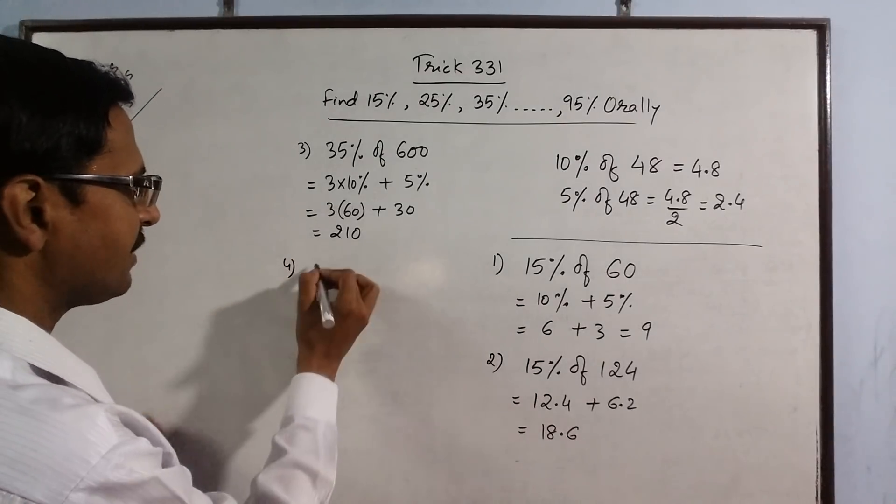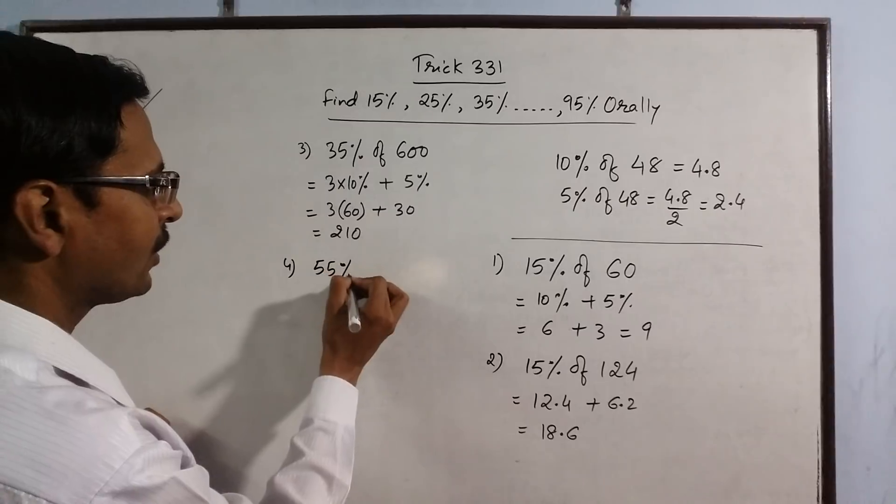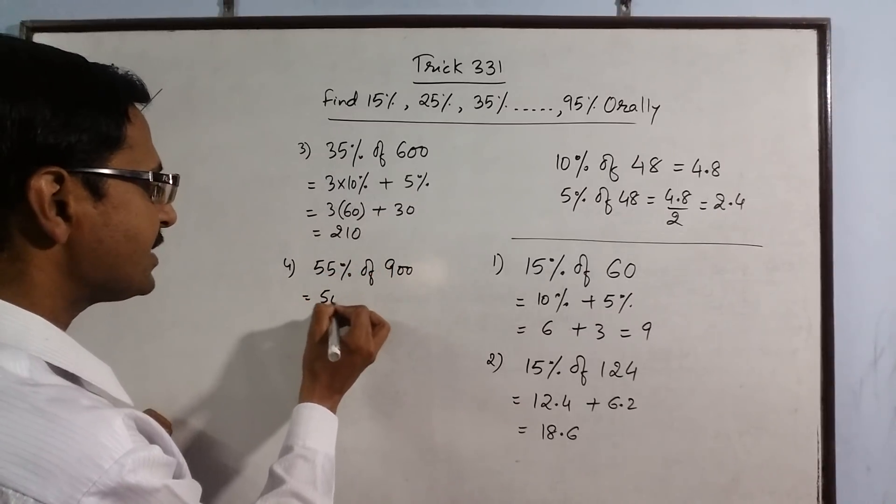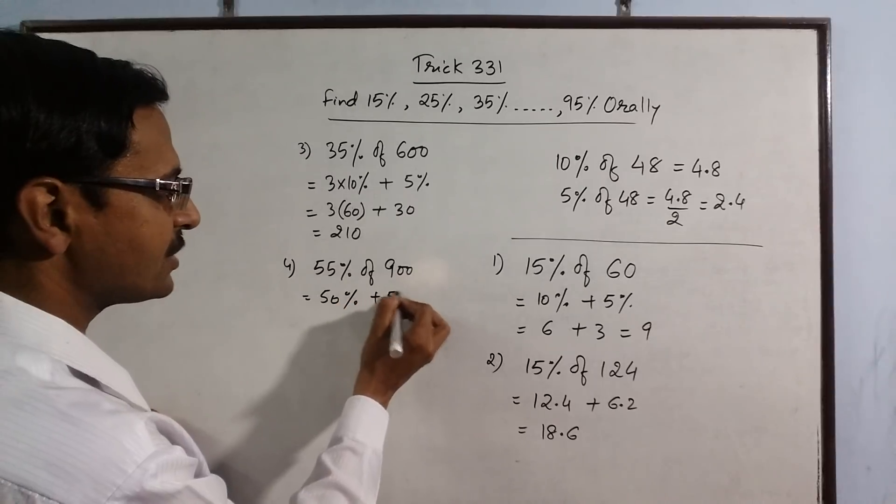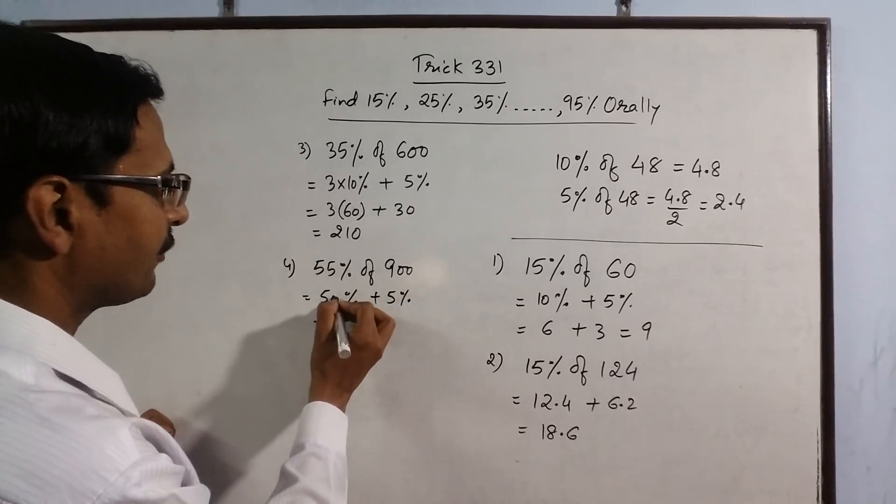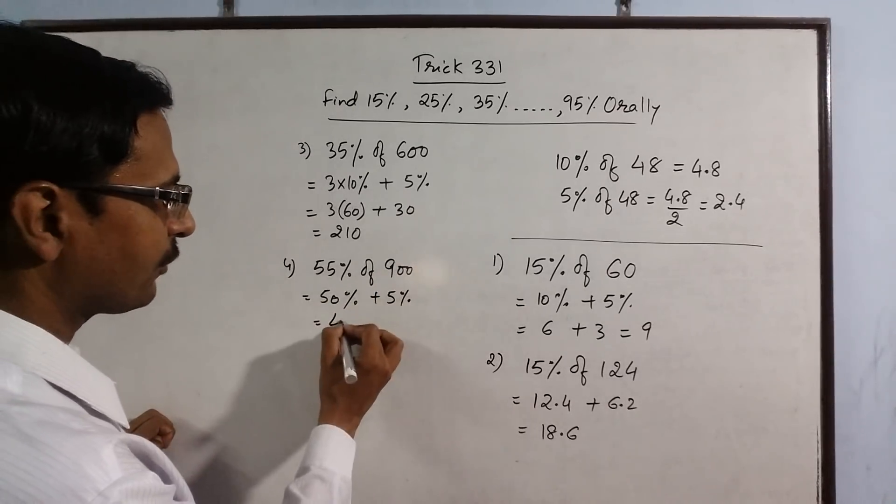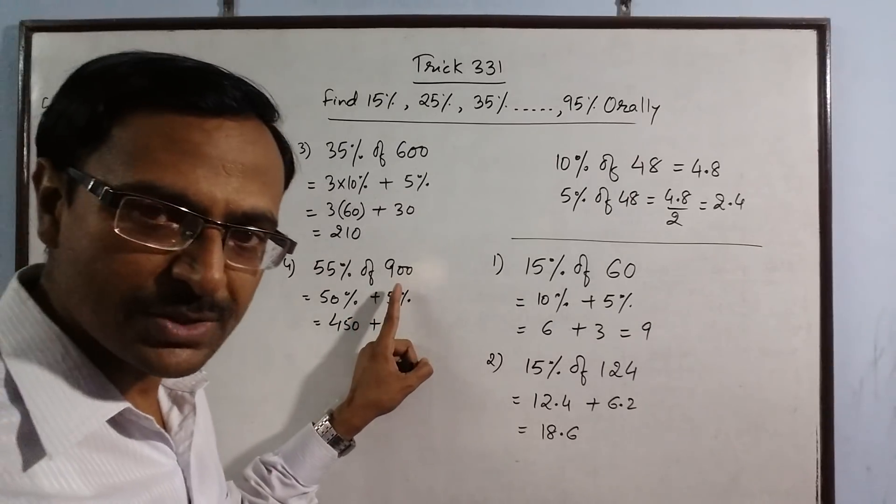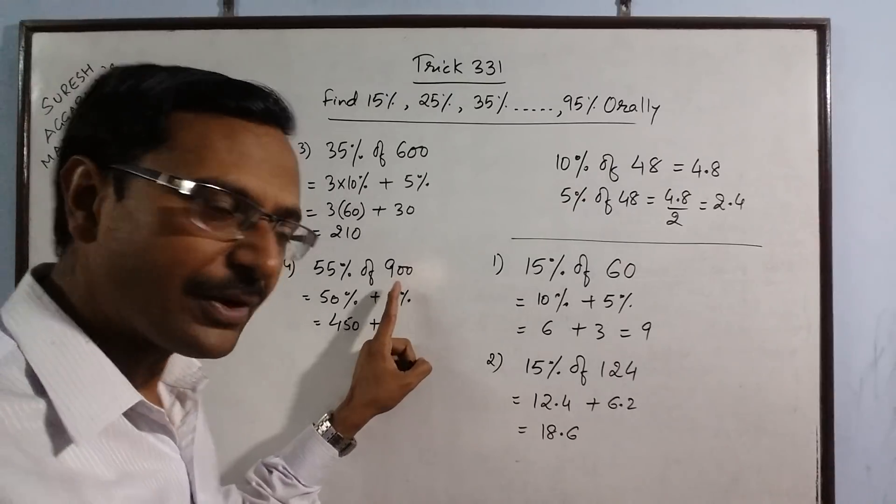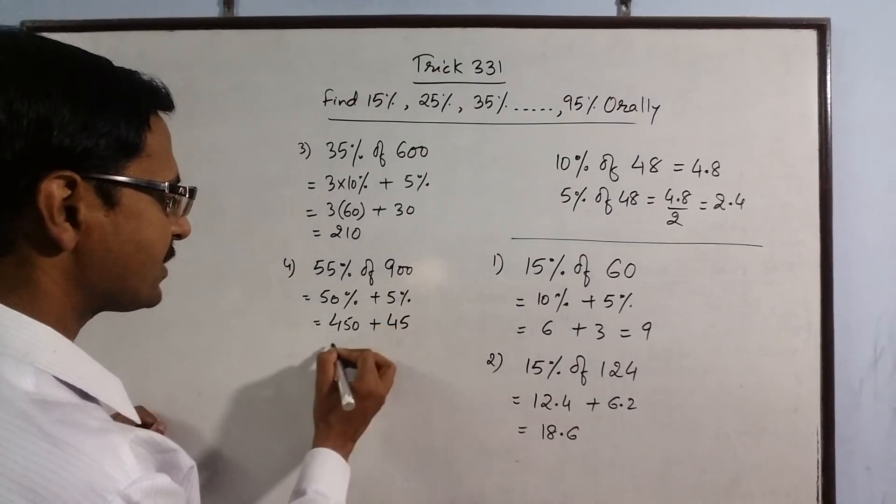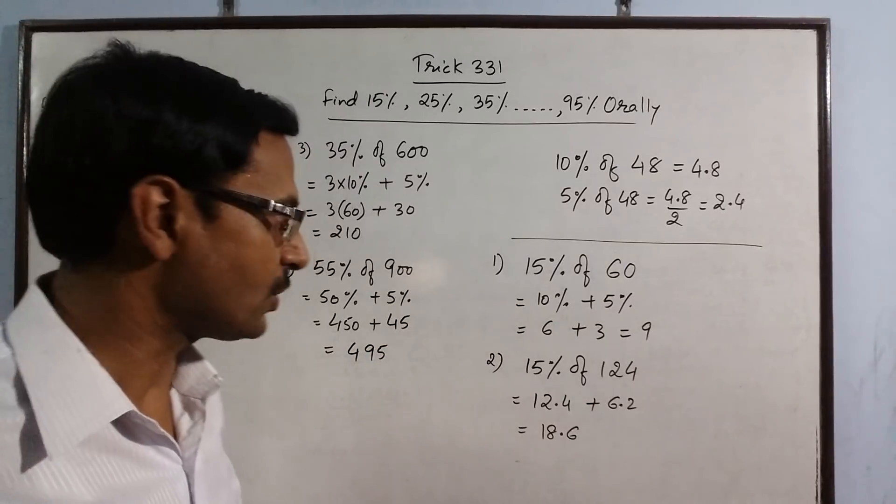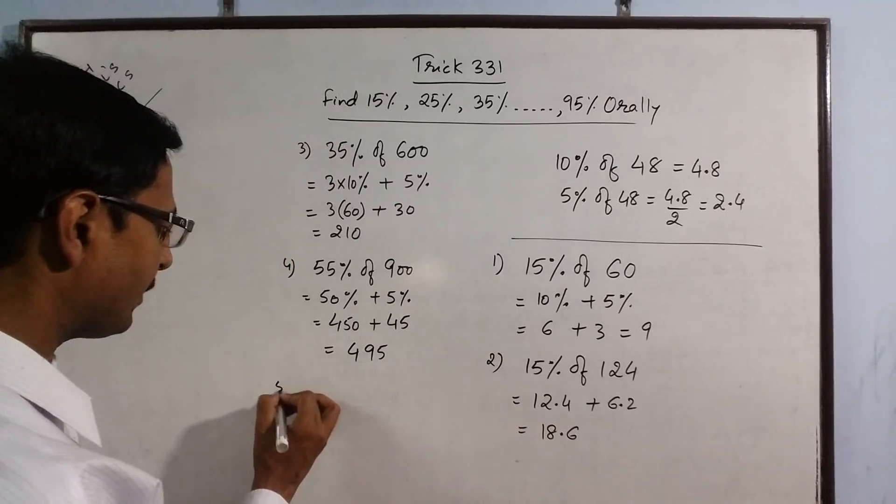Take more examples. Say we have 55% of 900. Now 55% is basically 50% plus 5%. Now 50% means half, so 450. And what is 5%? For that you have to see what is 10%. 10% is 90. Half of 90 is 45. So 450 plus 45 is 495, which is 55% of 900.